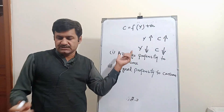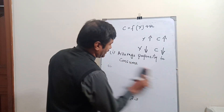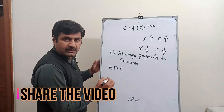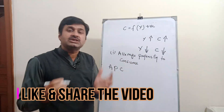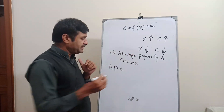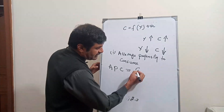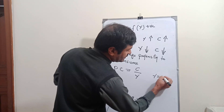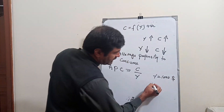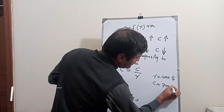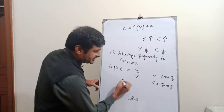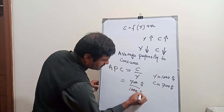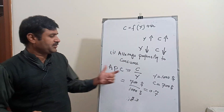What is average propensity to consume? Average propensity to consume is denoted as APC. The definition is: the ratio between consumption and income is called average propensity to consume. For example, if income is $1,000 and consumption is $700, then APC equals 700 divided by 1,000, which equals 0.7. So this is the average propensity to consume.